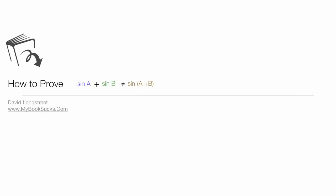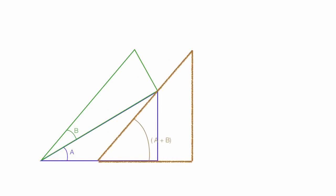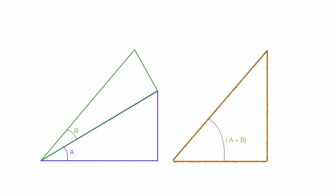In this tutorial, I'm going to show you — or prove to you — that sine a plus sine b is not equal to the sine of a plus b. I will show you that sine of a plus b is equal to sine b cosine a plus cosine b sine a.